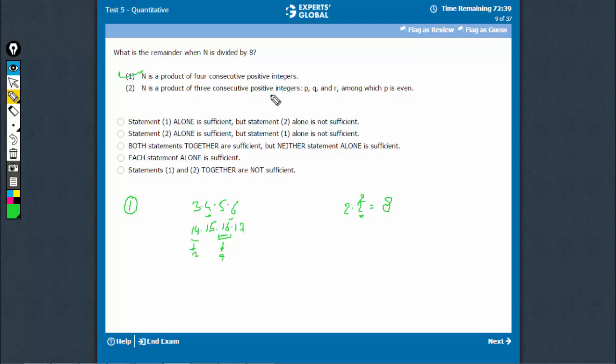n is a product of 3 consecutive positive integers, p, q and r. So now, it says there are going to be 3 consecutive positive integers. However, if it starts with something even, if it starts with something like, say, 2, 3, 4,